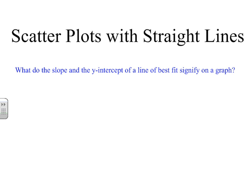We're going to look at scatter plots with straight lines and what do the slope and the y-intercept of a line of best fit signify on a graph? First, let's take a look at what a slope is. A slope represents the rise over run on a graph and otherwise the angle of the graph.